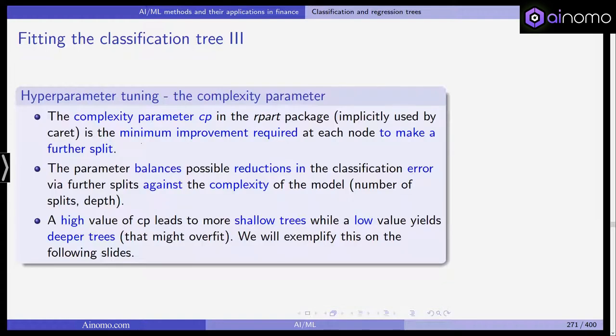This complexity parameter, CP, is the minimum improvement required at each node to make a further split. Remember that we are trying to train a tree here, meaning that at each level, at each node, you need to decide whether you want to go one level deeper, or if you say this is enough, the tree is deep enough, we have enough accuracy.